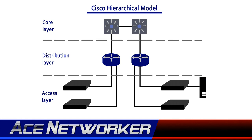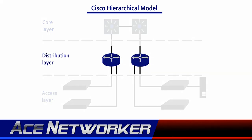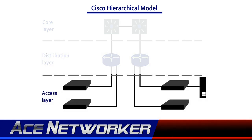There are three layers in the Cisco Hierarchical Model: the core layer, sometimes called the backbone; the distribution layer, also called the routing layer; and the access layer, sometimes called the switching layer.